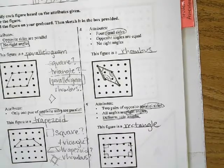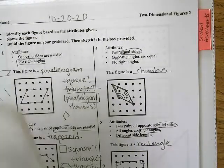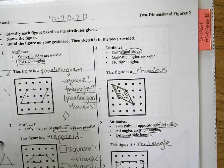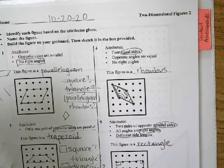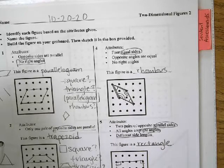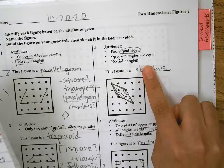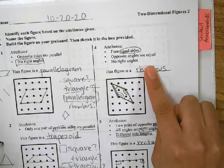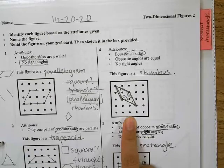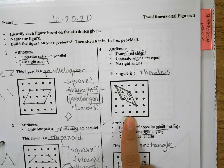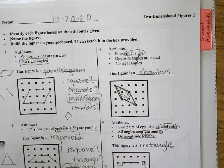Number four says four equal sides, opposite angles are equal, and no right angles. So it can't be a square or rectangle. It can't be a trapezoid. It could either be a rhombus or a parallelogram, but it says opposite angles are equal, no right angles, and four equal sides. We already did a parallelogram. This is a rhombus because all sides are equal—four equal sides.